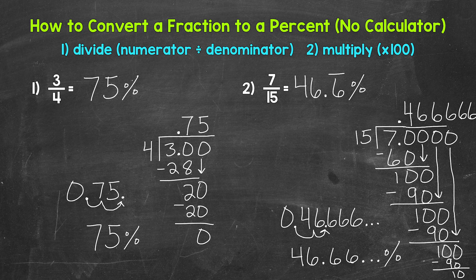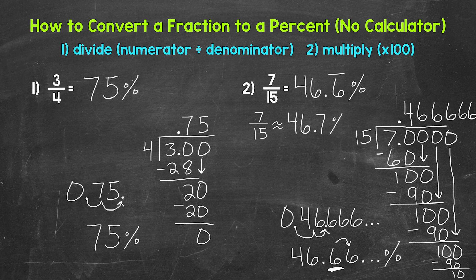The next way to write this percent is to round. For this example, we're going to round to the tenths place. We see we have a six in the tenths with a six to the right in the hundredths place — this tells us to round up. So if we round to the nearest tenth, seven fifteenths is approximately — and I'm using the approximately symbol here since we are rounding, it's not exact — 46.7 percent.